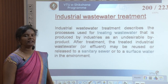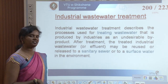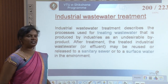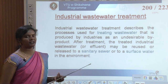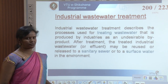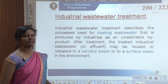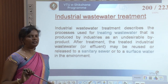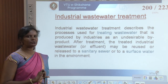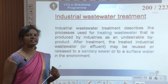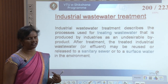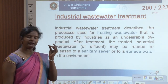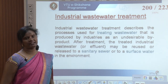That is why water has to be treated at the source itself. Industrial wastewater treatment describes the processes used for treating wastewater produced by industries as an undesirable by-product. After treatment, the treated industrial wastewater or effluent may be reused or released to a sanitary sewer or to a surface water body.